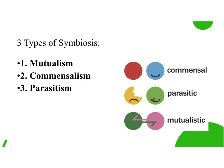Today we're going to look at three different types of symbiosis. One is mutualism, the second is commensalism, and the third is parasitism. Go ahead and write those three words down, and then on the next three slides we'll talk about each one in depth.